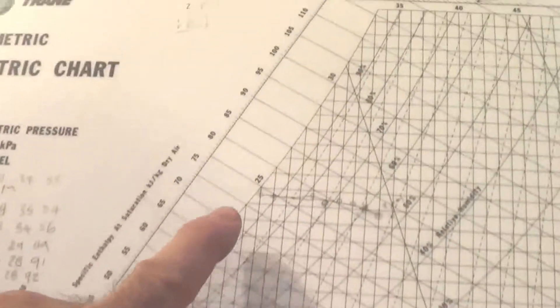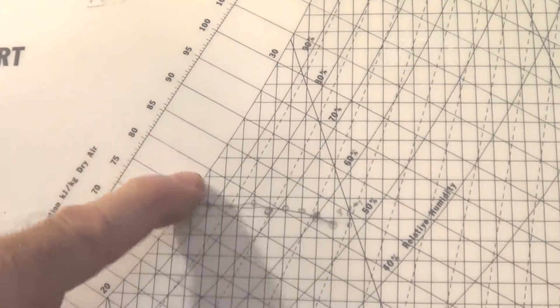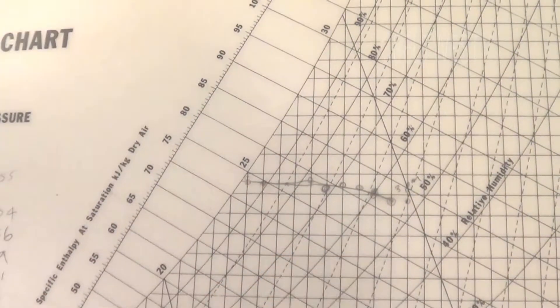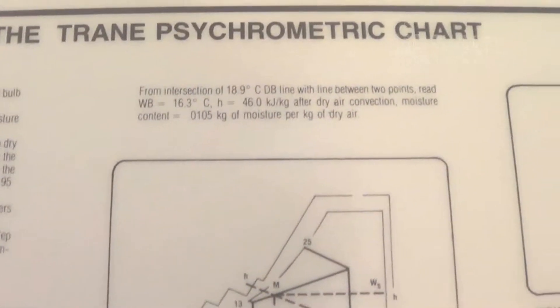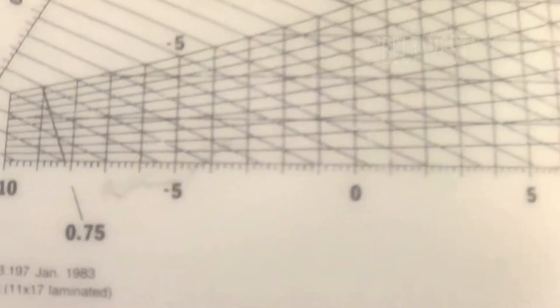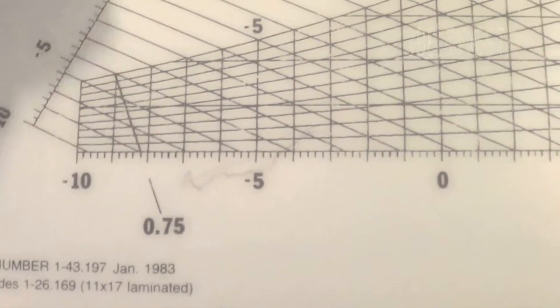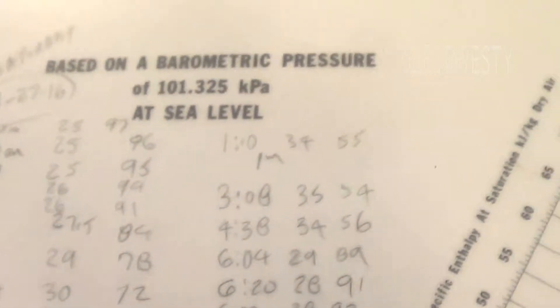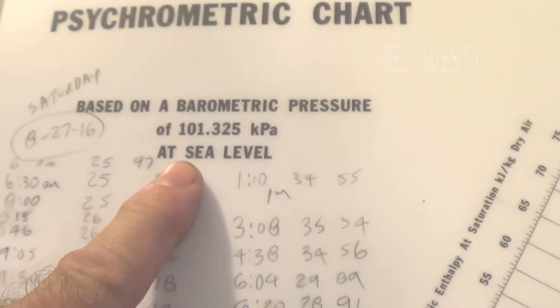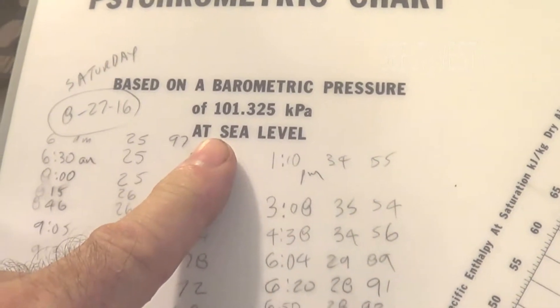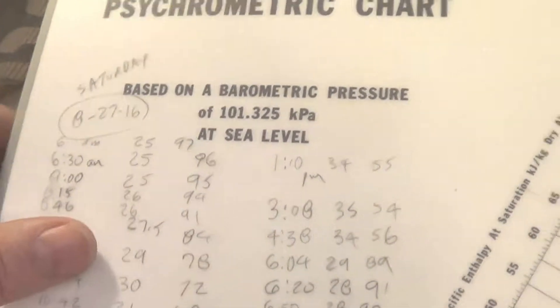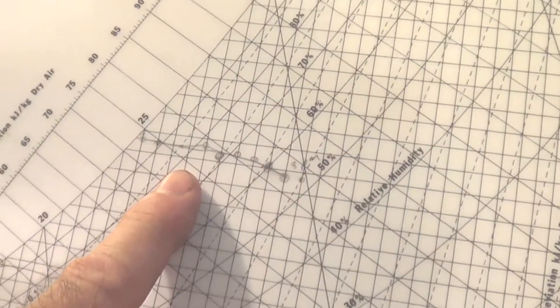These are the wet bulbs. If you measure a wet bulb condition, you've got wet bulb lines. These are in the instructions in the back. This is the Trane psychrometric chart that is in metric and this is based at sea level.